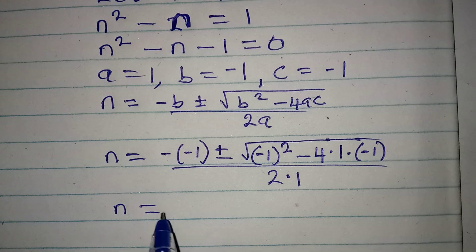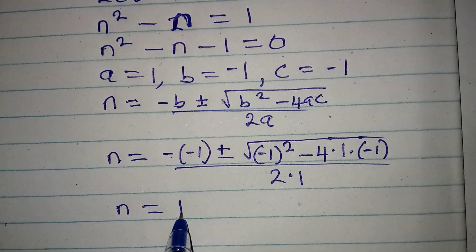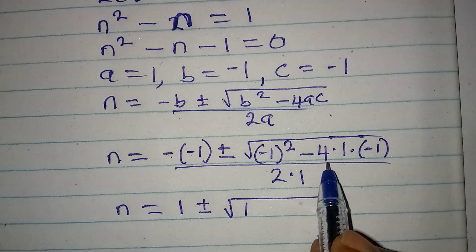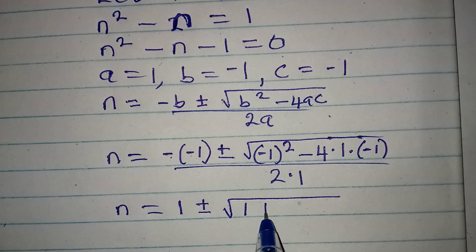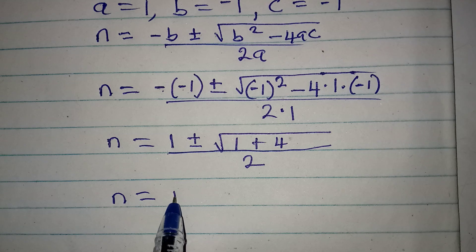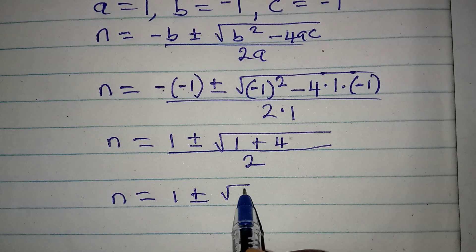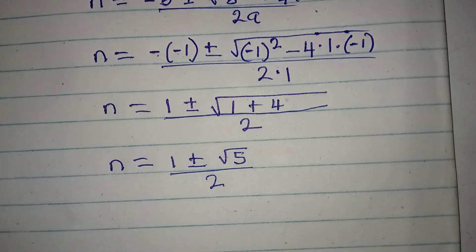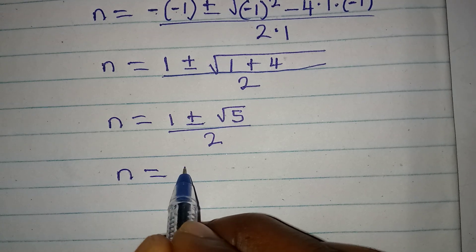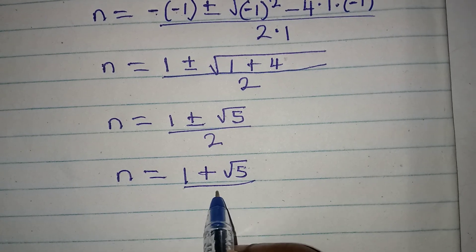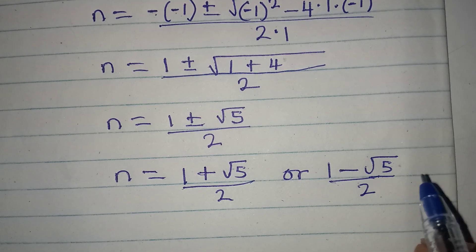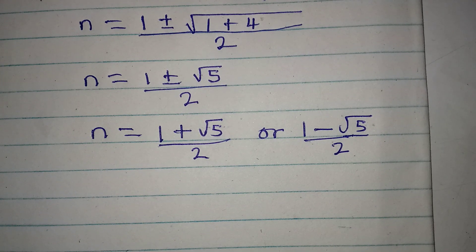Now our n will be: negative negative is positive, so we have plus 1, then plus or minus. Minus 1 squared is 1, then minus 4 times 1 times minus 1 gives us plus 4, and this will be over 2. So n from here will be equal to 1 plus or minus square root of 5, over 2. So we have n equal to 1 plus square root of 5 over 2, or 1 minus square root of 5 over 2. These are the values of n.